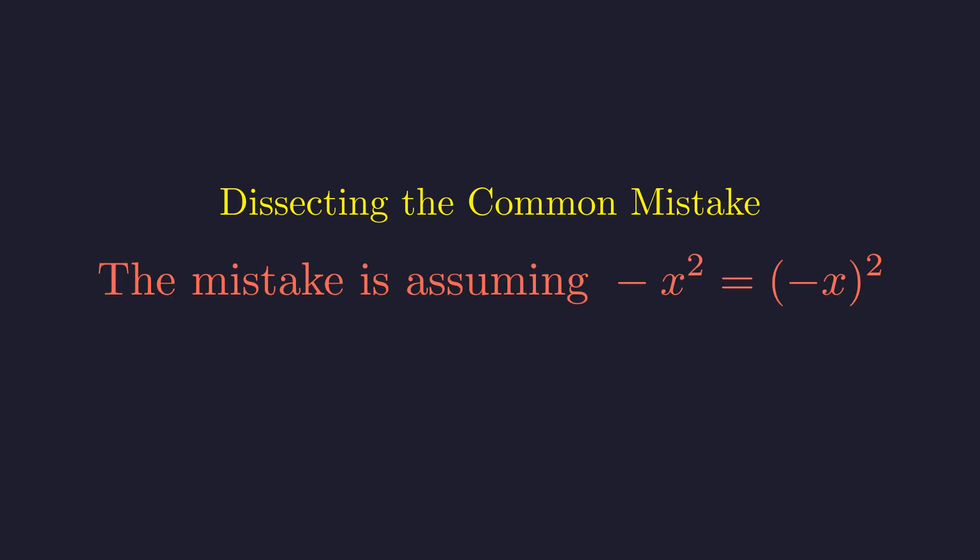Let's start by looking at where people typically go wrong. The mistake usually comes from a seemingly reasonable assumption. The mistake is assuming that negative x squared is the same thing as the quantity negative x squared. But these are actually two completely different expressions.